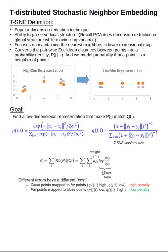An important property of this error function is its asymmetric penalty. It applies a high penalty when data points that are very close in the higher-dimensional space are projected far apart in the lower-dimensional space. However, the penalty is low when points that are far apart in higher dimensions are projected as closer together. This asymmetry arises from the log of the high-dimensional probability divided by the lower-dimensional probability, weighted by the higher-dimensional probability.